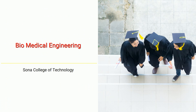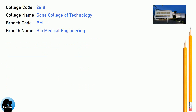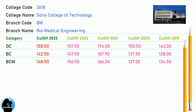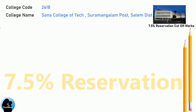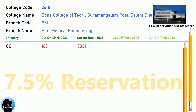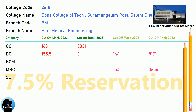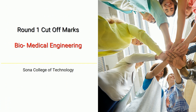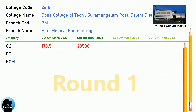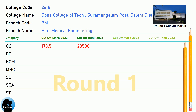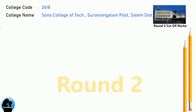DNA cut-off for Sona College of Technology in Biomedical Engineering. DNA 7.5 Reservation cut-off for Sona College of Technology in Biomedical Engineering. DNA Round 1 cut-off for Sona College of Technology in Biomedical Engineering. DNA Round 2 cut-off for Sona College of Technology in Biomedical Engineering.